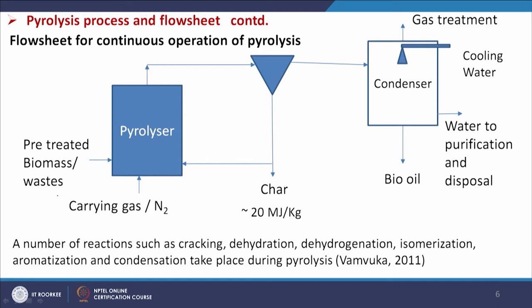For continuous operation, pre-treated biomass and waste is used because feed stock properties must be maintained for proper heat transfer and reactions. A carrying gas — nitrogen — provides the inert atmosphere. The gas vapors produced will contain some particulates or char, which settle and are recycled. The remaining vapors are condensed: the non-condensable part goes out as gas for further treatment, and the condensed part is collected as bio-oil. A cooling water arrangement is made for purification and disposal.